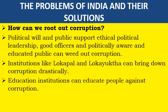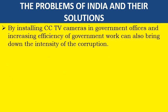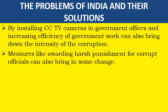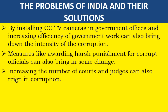By installing CCTV cameras in government offices and increasing the efficiency of government work, corruption can also be reduced. Harsh punishment for corrupt officials can bring some changes. Increasing the number of courts and judges can also reign in corruption.